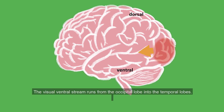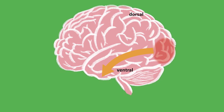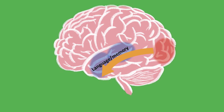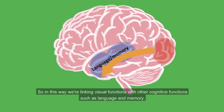The visual ventral stream runs from the occipital lobes into the temporal lobes, where the temporal lobes are known to be important for tasks such as language and memory. In this way, we're linking together visual perception with other cognitive functions such as language and memory.